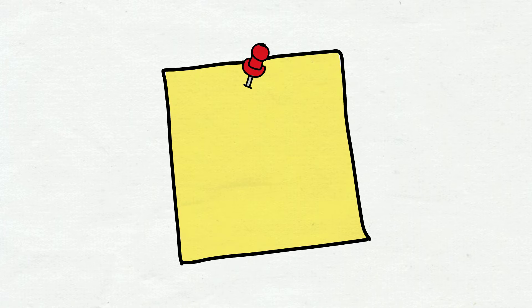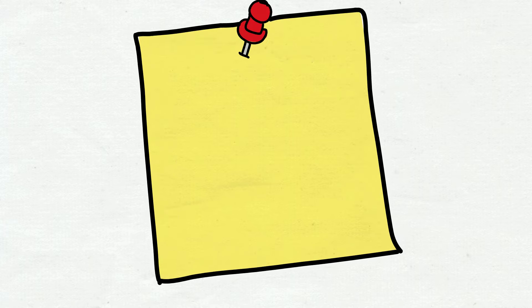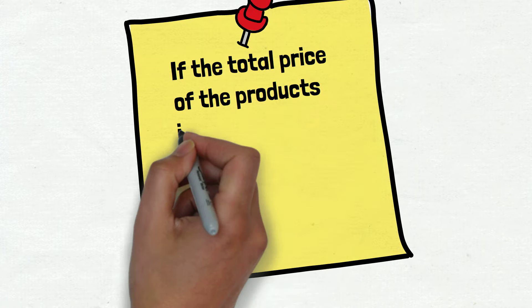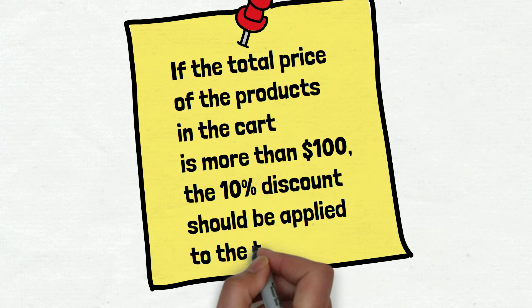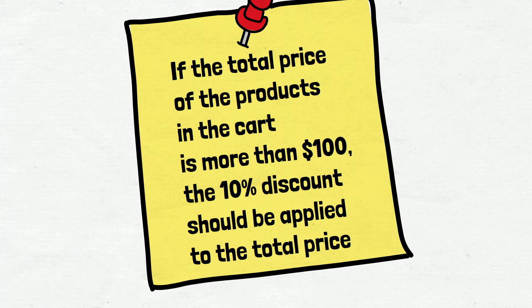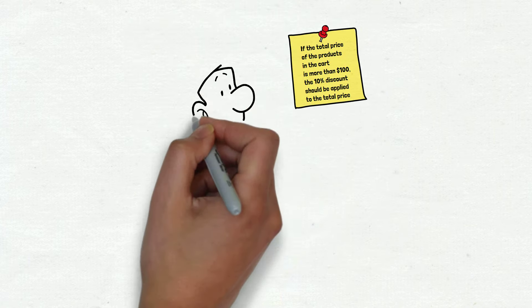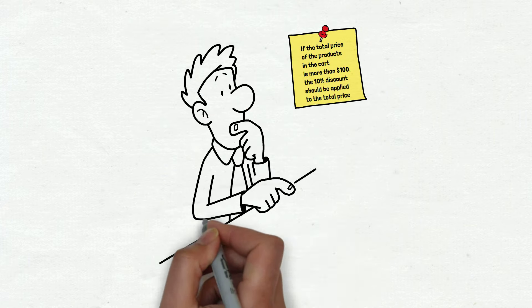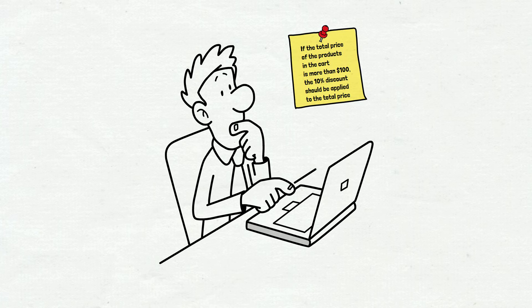In the IT world, everything starts with the requirements. The developer won't start to write code until he knows what exactly he needs to write. Let us show you a small example of the requirements. If the total price of the products in the cart is more than $100, the 10% discount should be applied to the total price. It's a very simple and clear story. So, what possibly can go wrong?